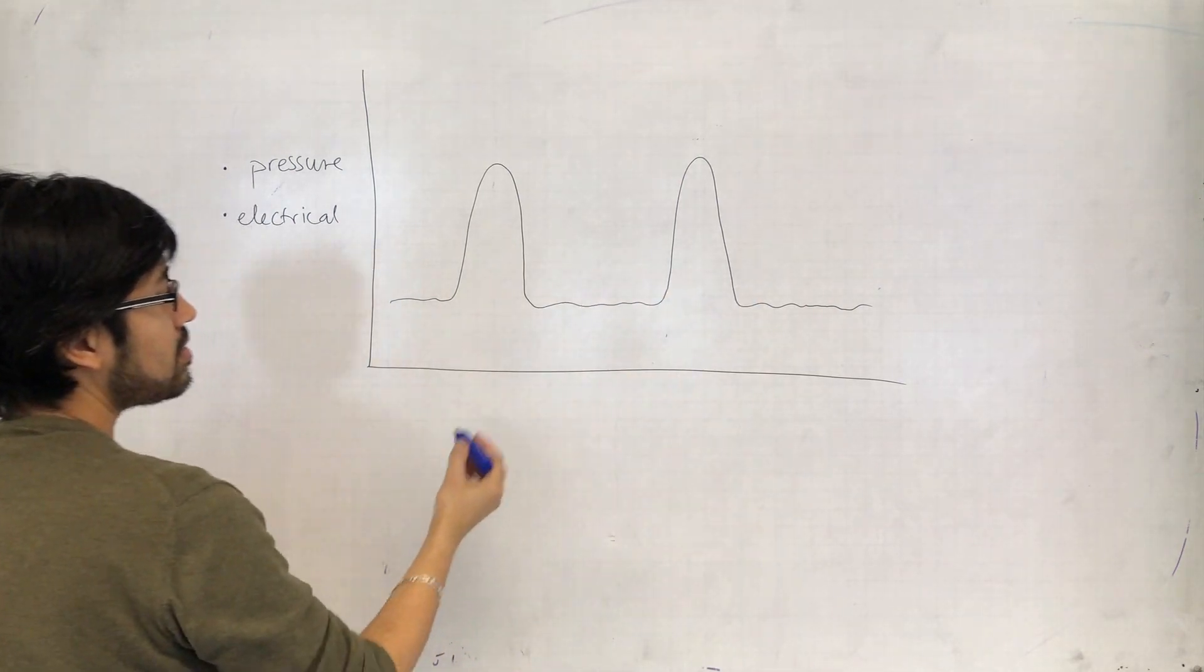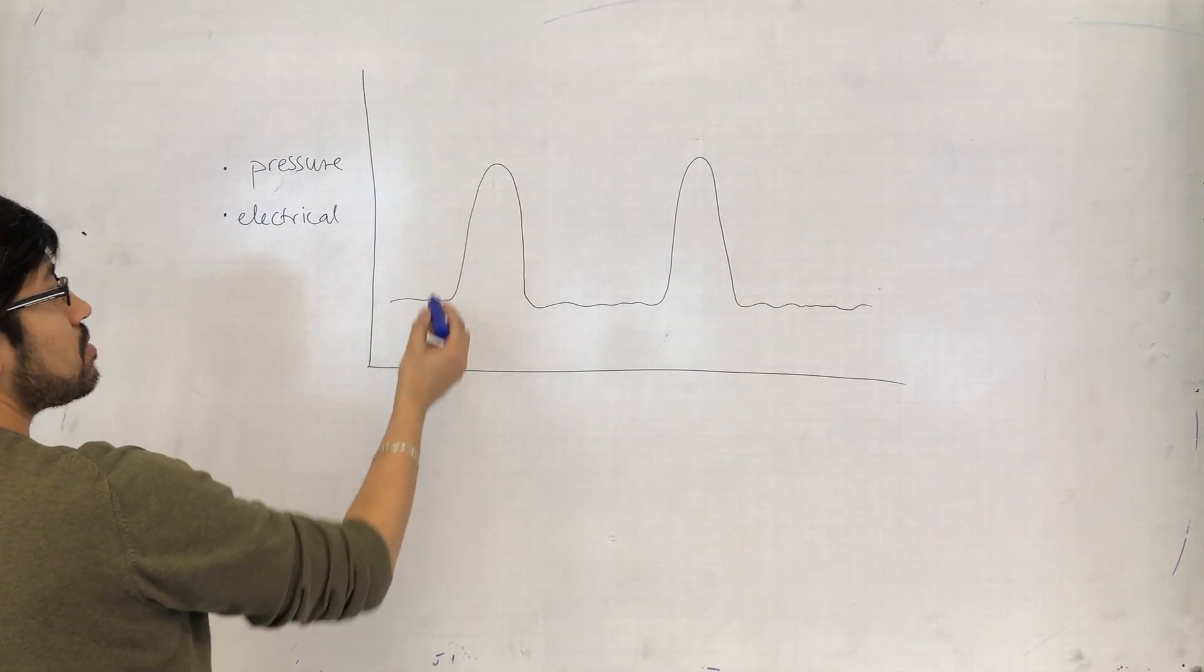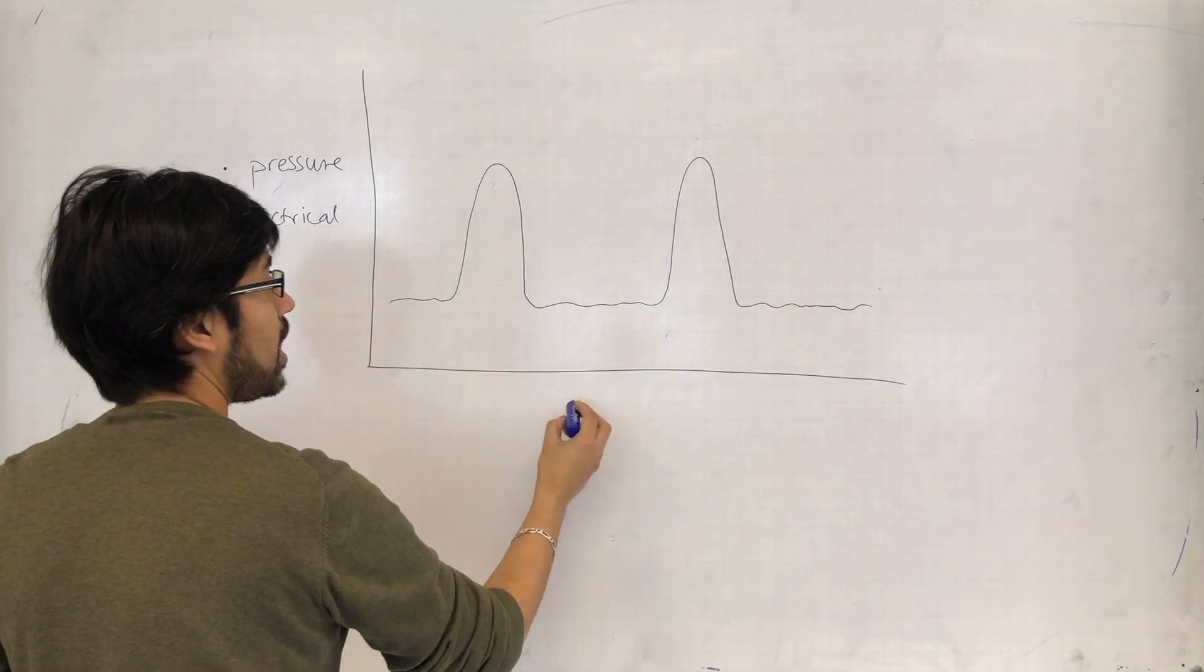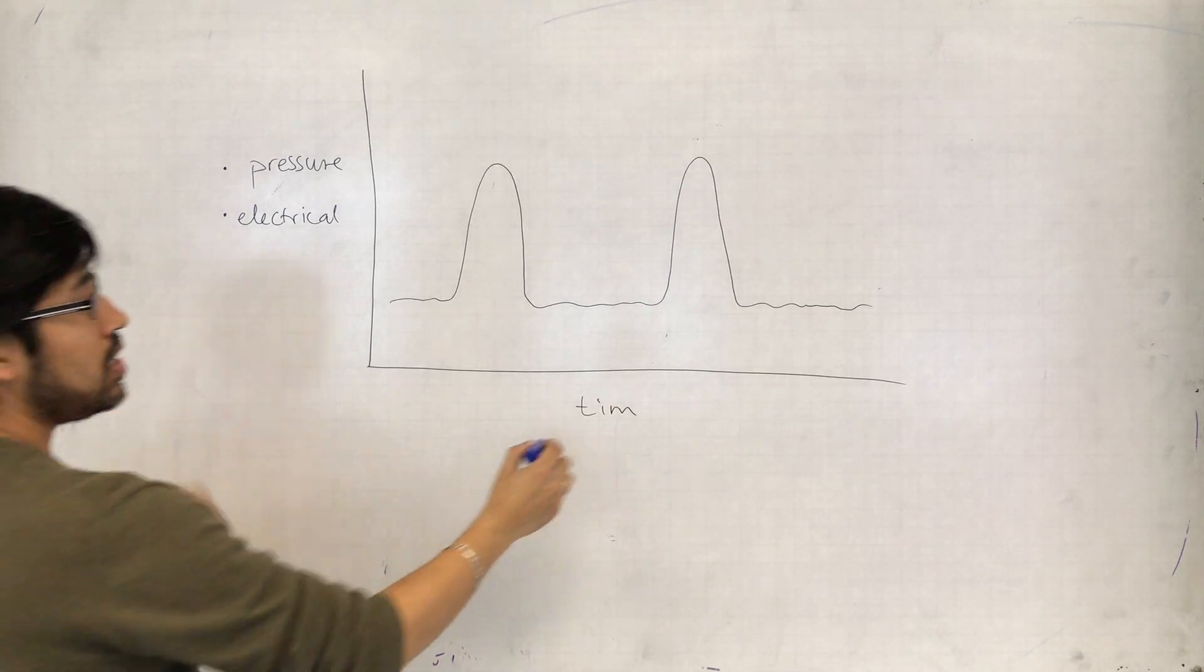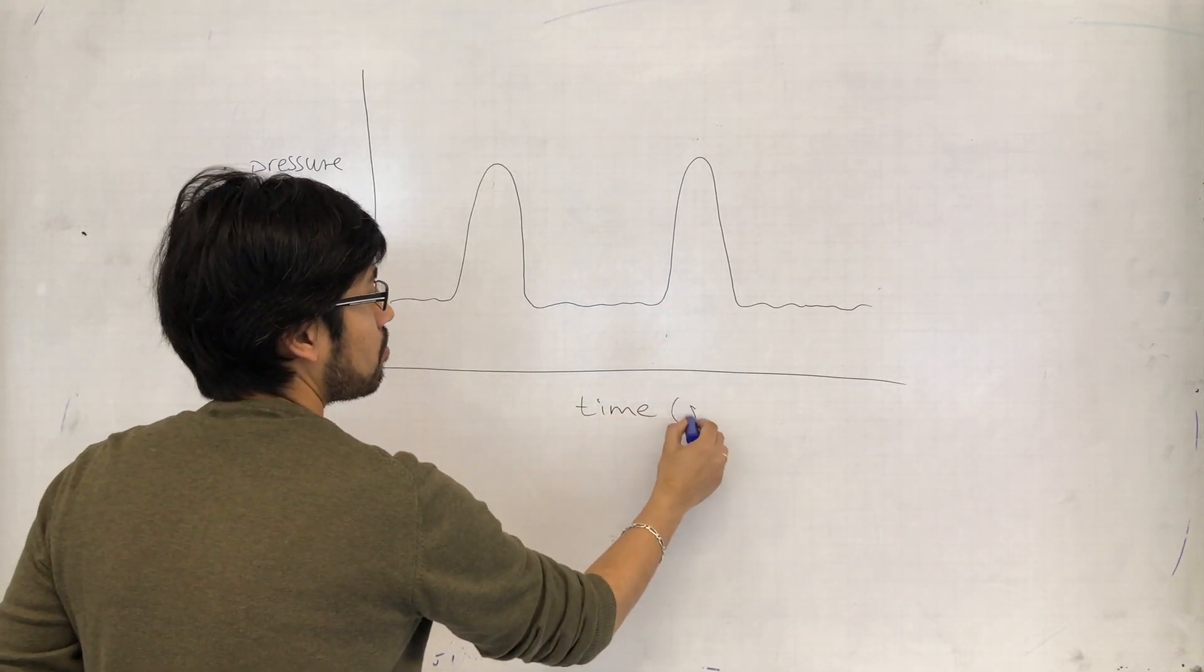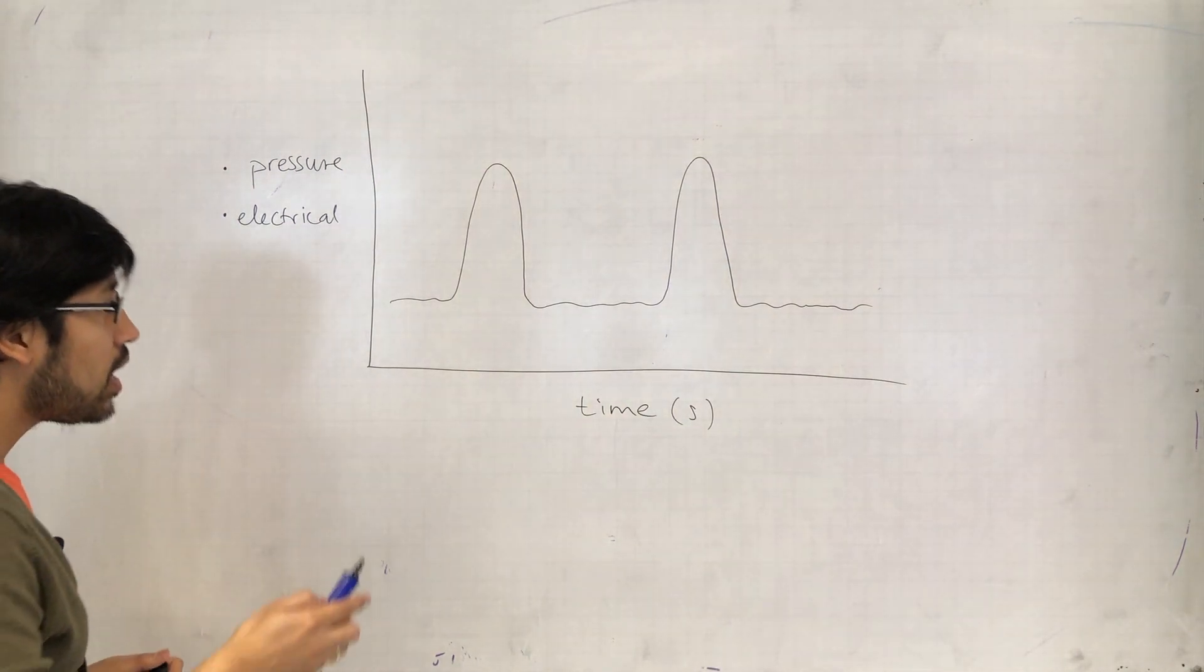So you have something like this - maybe this is the ventricular pressure changes, for example. And then on the x-axis, you will in either case have time, maybe in seconds, minutes, whatever.